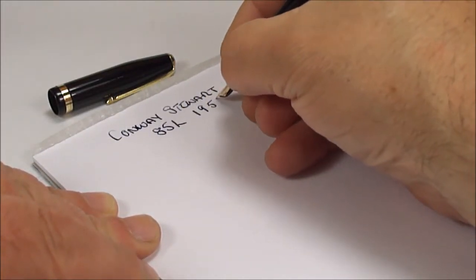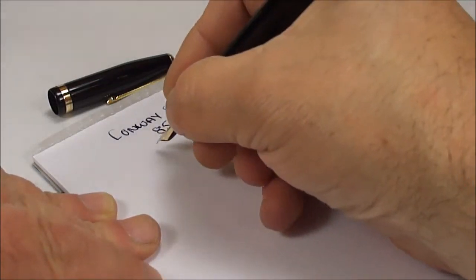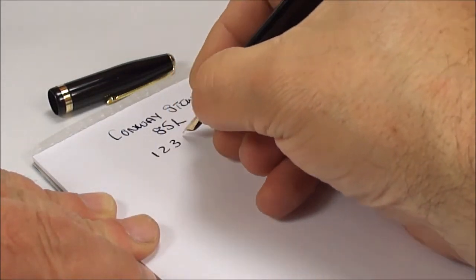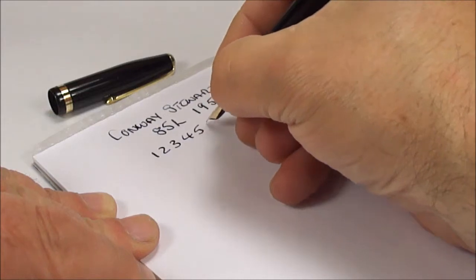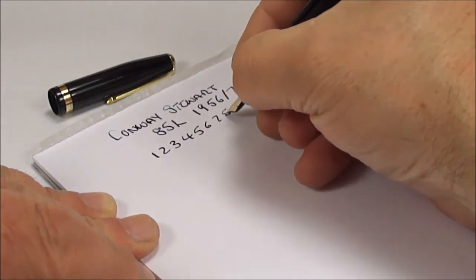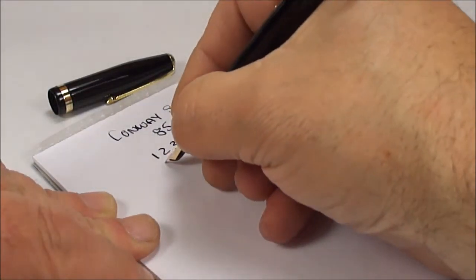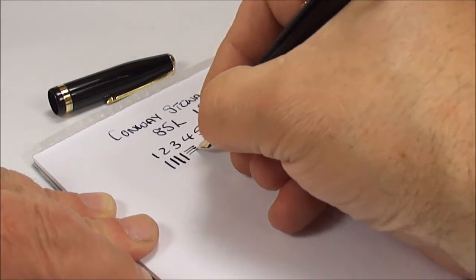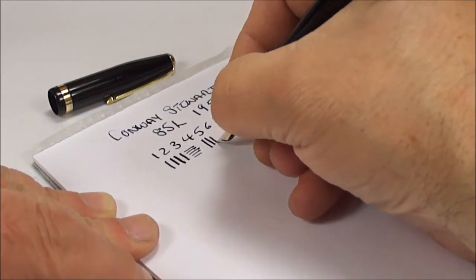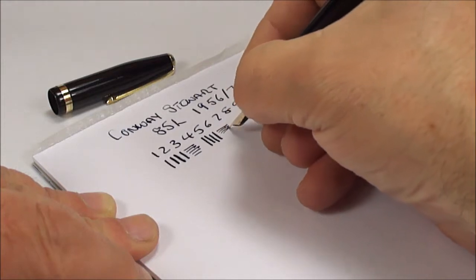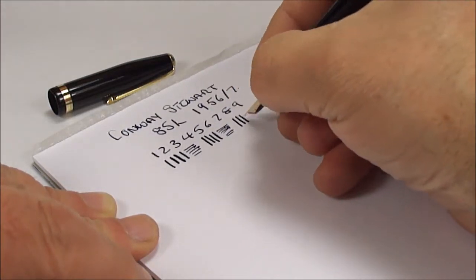A nice writer. I'm not actually applying any pressure at this particular time, but let's do it. And there we go—by applying a little bit of pressure, there is a little bit of flex to the nib. On the downward stroke, we're actually achieving a broader line.